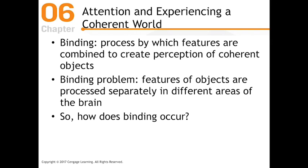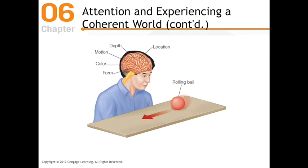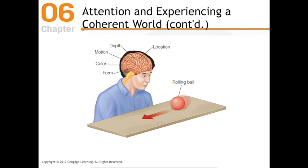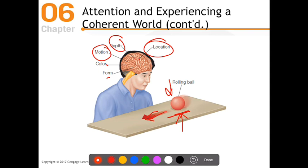The binding problem is this: different elements in the brain are responsible for seeing different features. For example, smoothness, roundness, line orientation, color, and motion — all these different features of the ball are housed in different areas of the brain. The area responsible for location and space, the depth, the motion, the fact that it's red, the form — all of these are processed in different areas of the brain, and together they lead to us viewing a rolling ball.